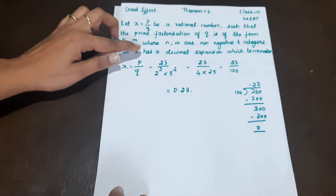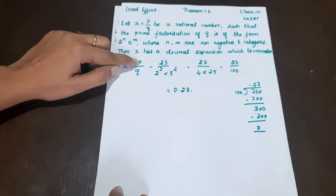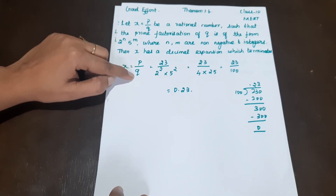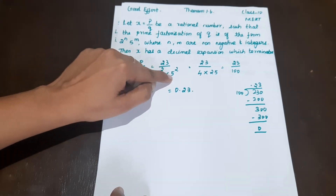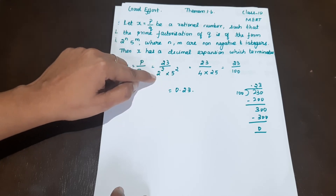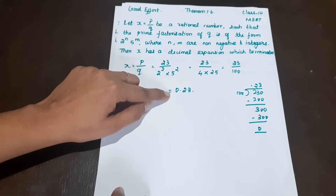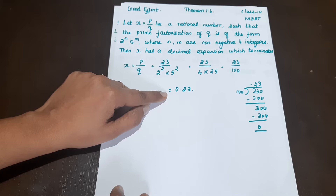So what does Theorem 1.6 tell us? If the rational number x = p/q, and q has the form 2 raised to the power n, 5 raised to the power m, then the decimal expansion will terminate. That is what Theorem 1.6 states.